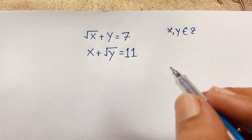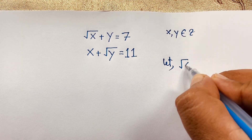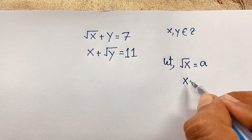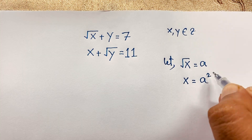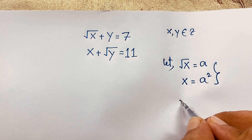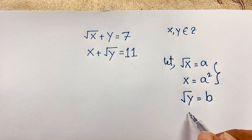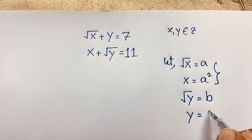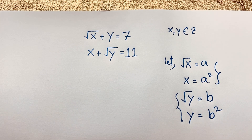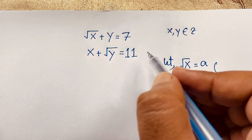I'll solve this question using an easy method. First, let square root of x equal a; then squaring both sides, x equals a squared. Then let square root of y equal b; squaring both sides, y equals b squared. Now I substitute these into the first and second equations.